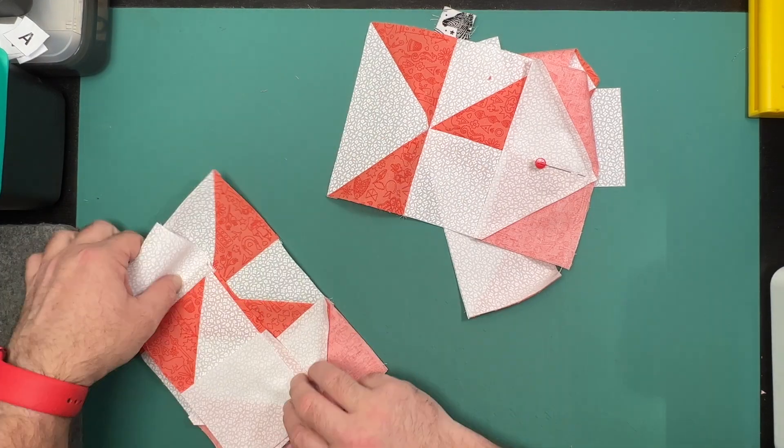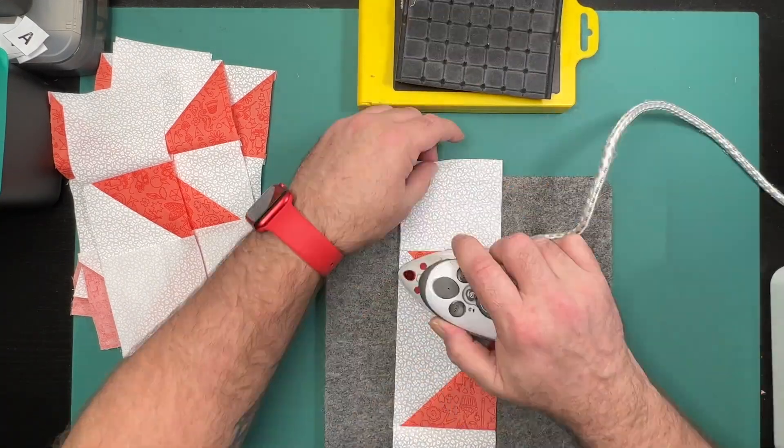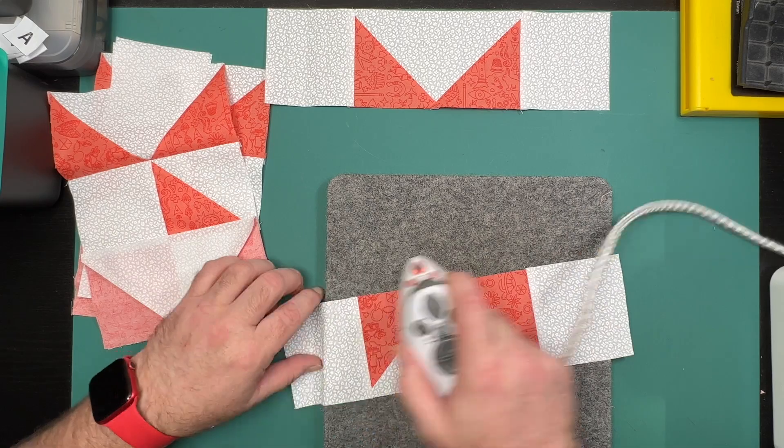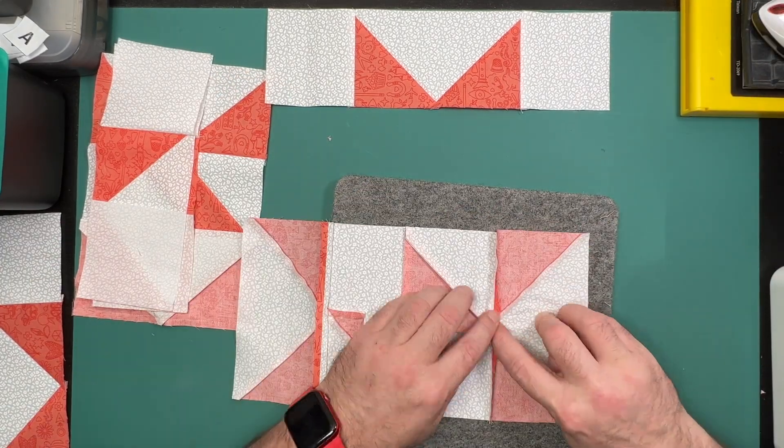With all of our seams now done on the vertical, we will take this to the pressing mat and press all of those seams into place to make them stick. As I said, we will press that center seam open.